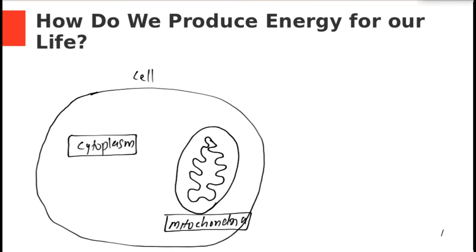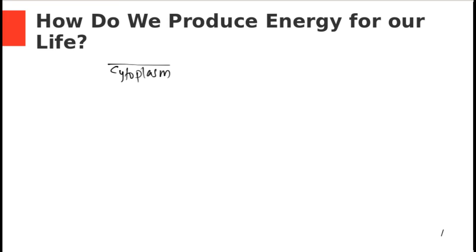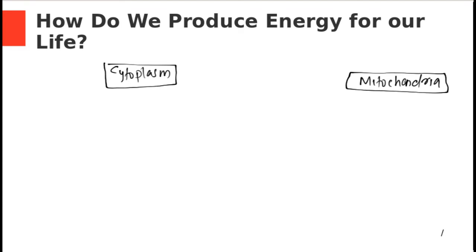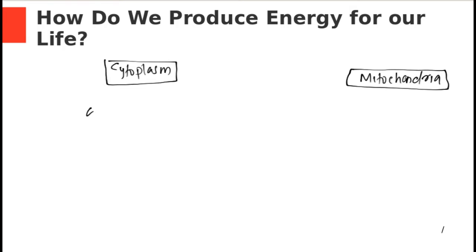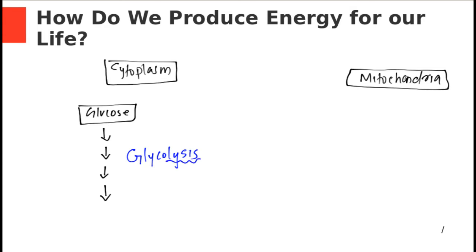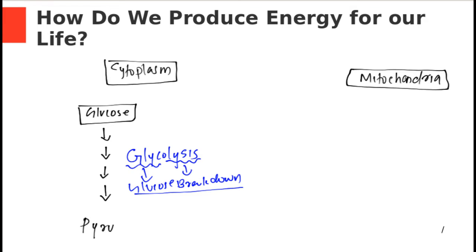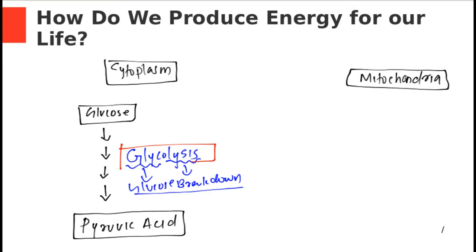There are cytoplasmic reactions and mitochondrial reactions. In the cytoplasm, our primary energy substrate glucose undergoes a series of chemical changes collectively known as glycolysis. The word 'lysis' means breaking down and 'glyco' indicates glucose, so the total meaning is glucose breakdown. At the end of this breakdown, a molecule of pyruvic acid is produced — that process is known as glycolysis, occurring in the cytoplasm of the cell.